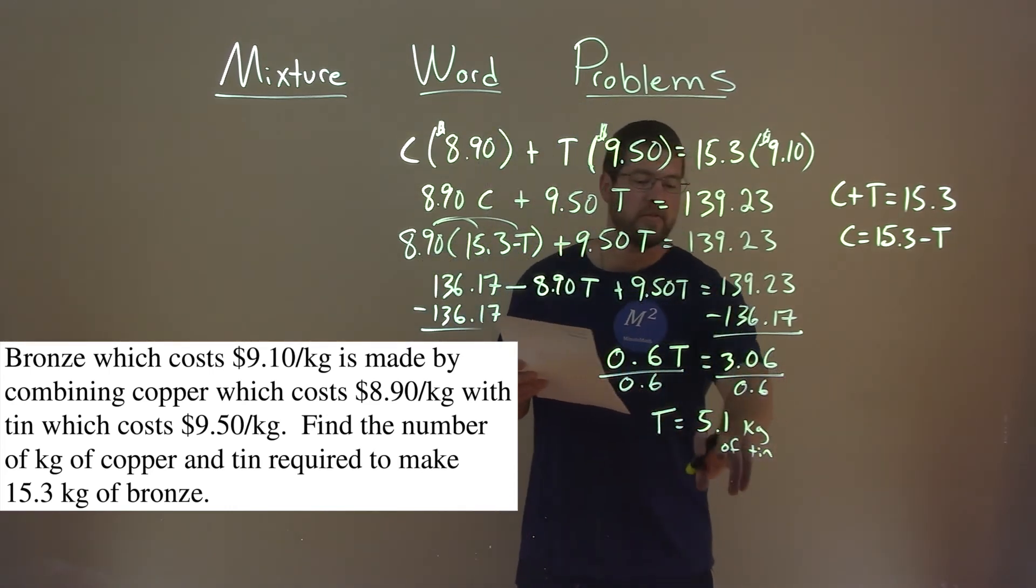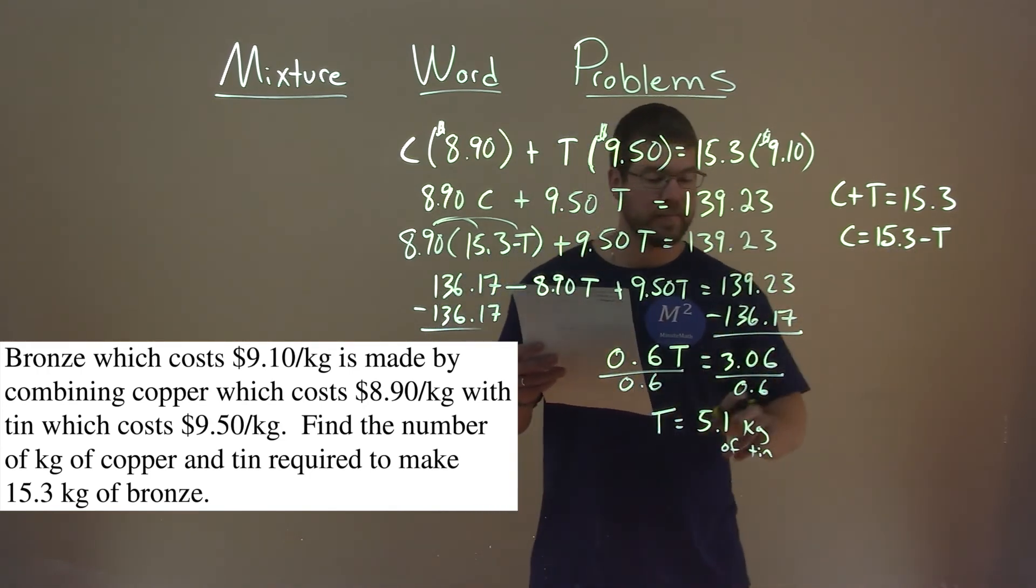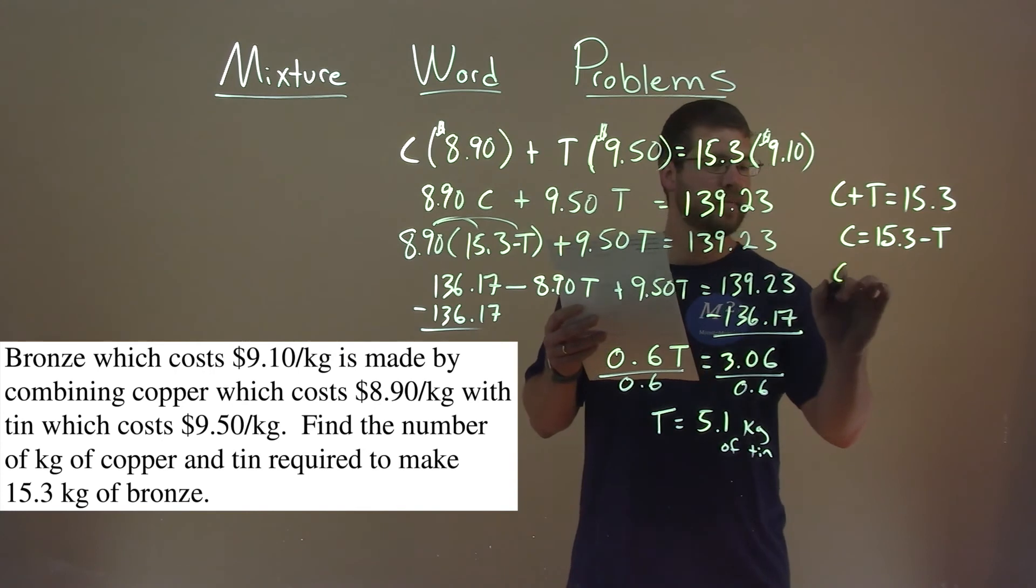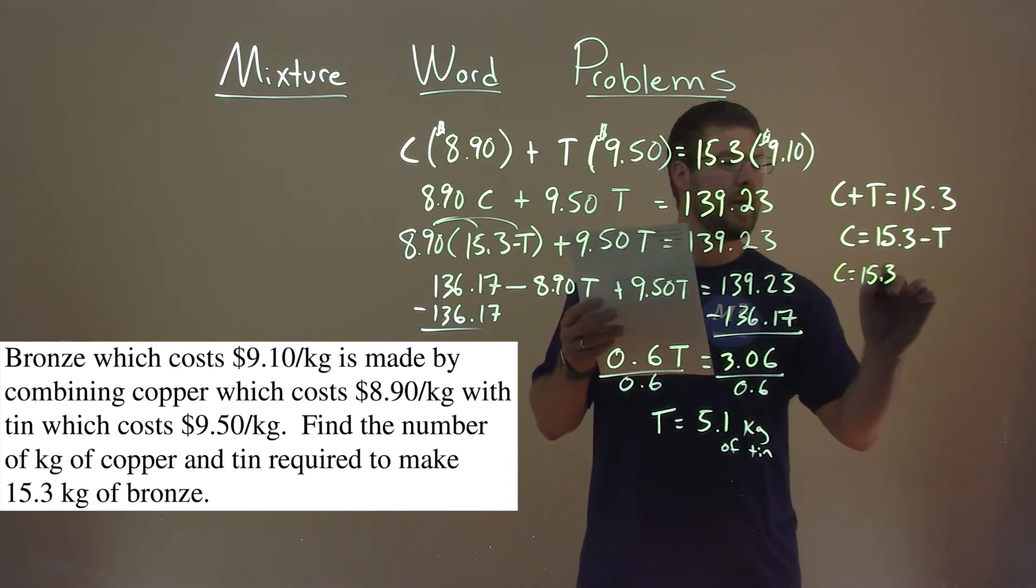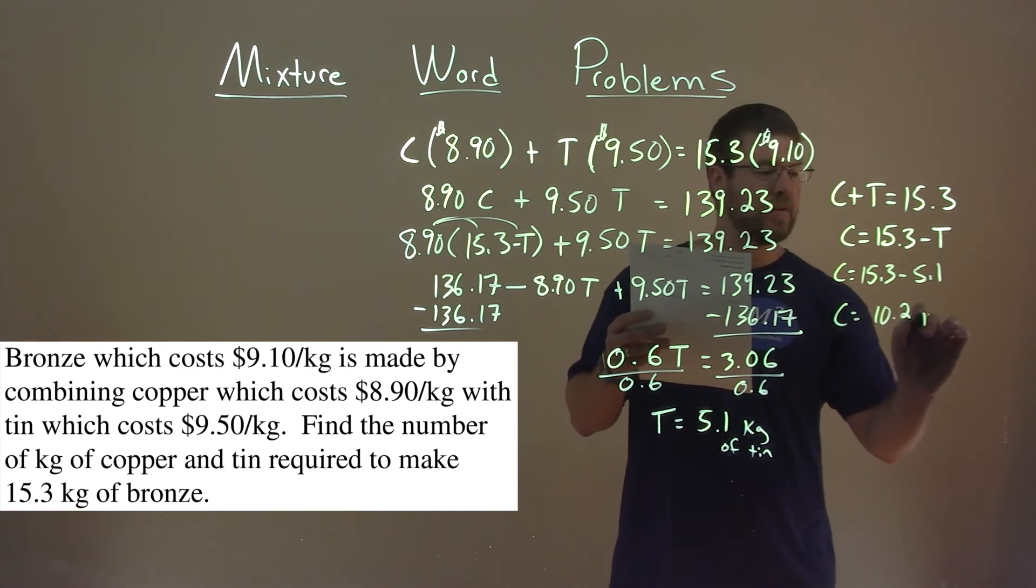So now with that information, we need to plug into our second equation to find the kilograms of copper. So C equals 15.3 minus 5.1, and 15.3 minus 5.1 comes out to be 10.2, and that's kilograms of copper.